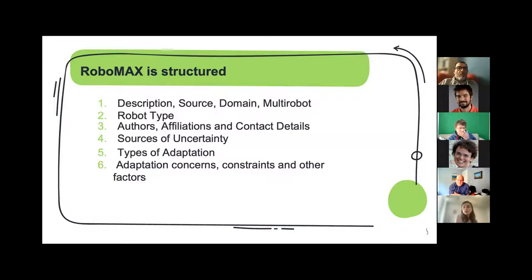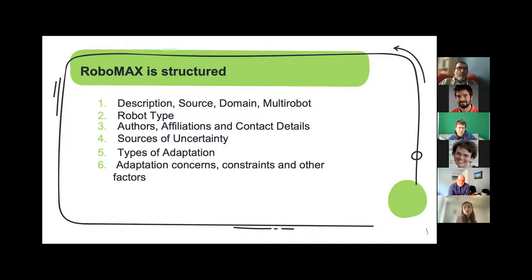Each exemplar contains a set of predefined and carefully selected information: general information such as the domain of the application, description of the robot system, sources (industry or academia), and provider contacts. It also contains more specific data such as sources of uncertainty, adaptation types, concerns, and constraints. For several of these items we offer practitioners many options collected from different studies, making it easier to insert useful information and for us to curate each exemplar.